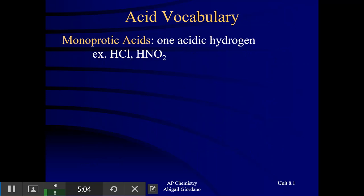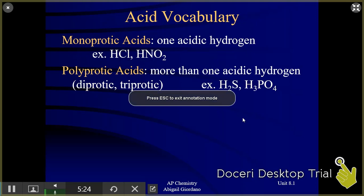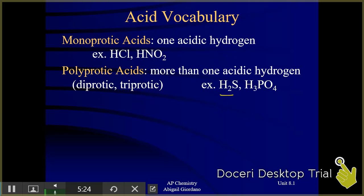A little bit more vocabulary: monoprotic — mono meaning one, protic meaning proton — these are acids that have just one hydrogen to give away. Whereas acids that have more than one hydrogen to give are called polyprotic. H2S is a diprotic acid; H3PO4 is a triprotic acid.